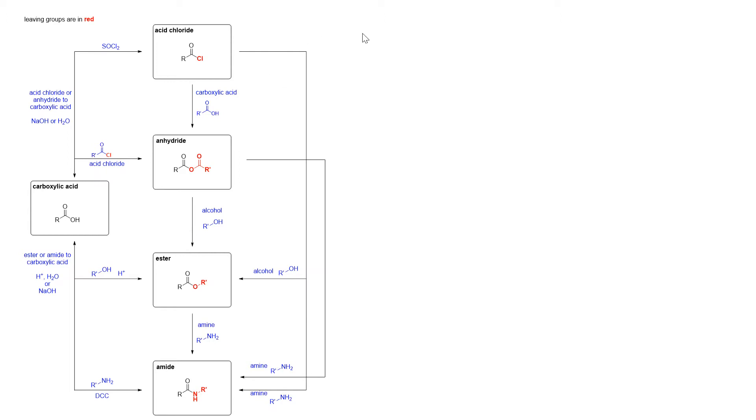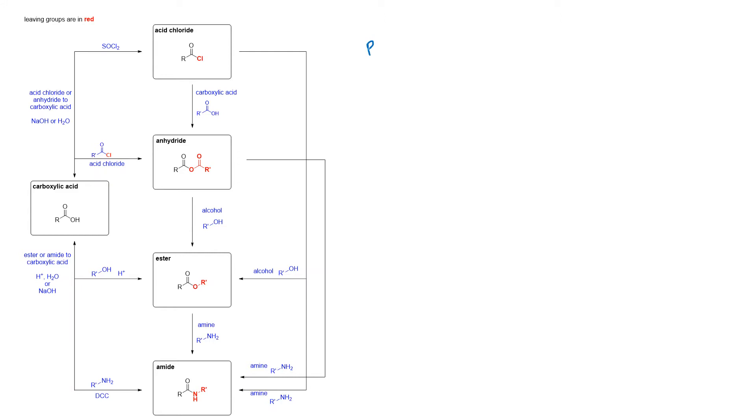So if you want to convert a carboxylic acid to an amide, you can't just take carboxylic acid plus amine and have them react together, right? That does not work. And the reason it doesn't work is that you have an amine, which is a good base, and a carboxylic acid, which is an acid. That's right there in the name.